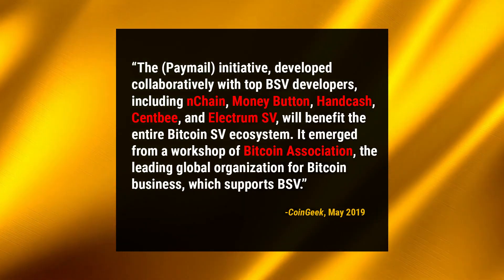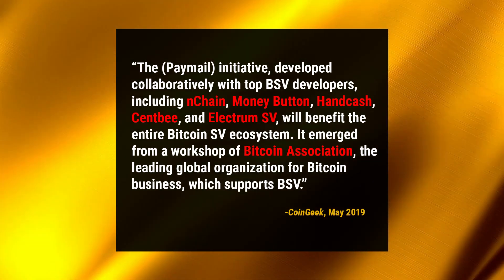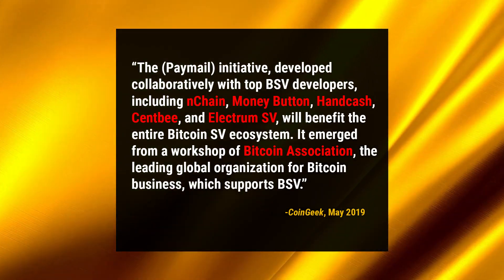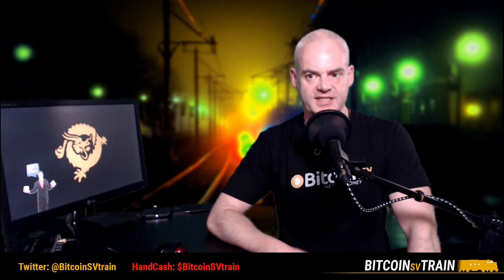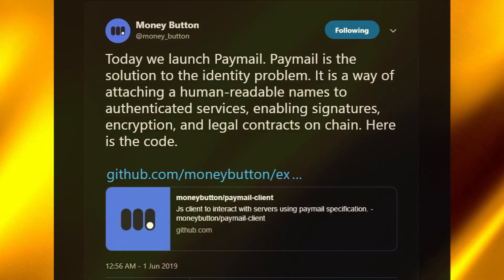Paymail was announced at the CoinGeek conference in Toronto in May 2019. According to the announcement, it was developed collaboratively with top BSV developers including nChain, Money Button, HandCash, and Electrum SV. It will benefit the entire Bitcoin SV ecosystem and emerged from a workshop of the Bitcoin Association. To put it simply, paymail is something that looks like an email address that's assigned to a Bitcoin public key — it saves you having to copy-paste or type out that entire string of letters and numbers. Money Button described it as a solution to the identity problem: a way of attaching human-readable names to authenticated services, enabling signatures, encryption, and legal contracts on chain.